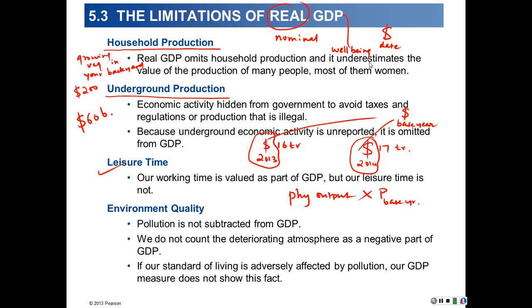Now we will talk about the limitations of real GDP. The first limitation is household production. What is household production? This is the production of final goods and services by households for their own consumption. So this would be something like growing vegetables in your backyard. If you had a large backyard and were an enthusiastic gardener, you could every year grow, say, a hundred pounds of tomatoes for your own consumption. Now would you consider this output to be part of GDP? Should it be part of GDP?